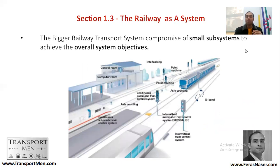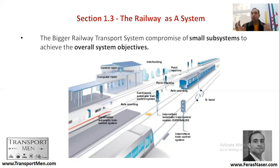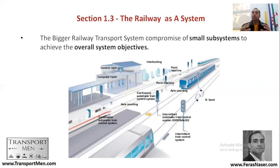The bigger railway transport system comprises smaller subsystems to achieve the overall system objective. It's important to understand that the railway itself consists of subsystems: trains are a subsystem, track infrastructure is another, electrification is another, and signaling is another. The trains themselves have their own subsystems — motors, suspension systems, bogies, wheels, and pantographs — all working together to achieve the overall system objective.